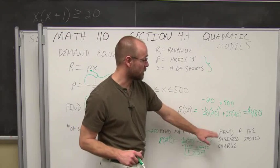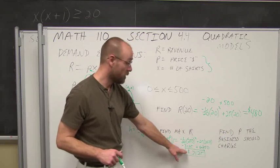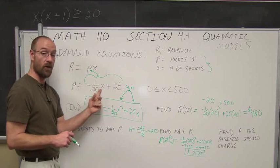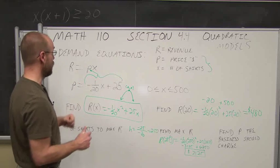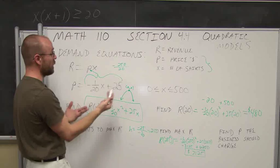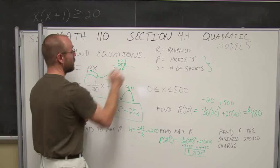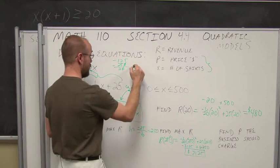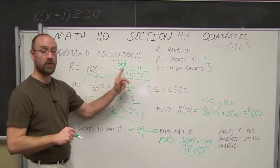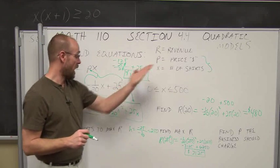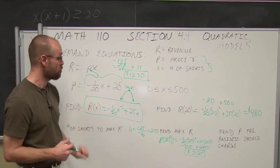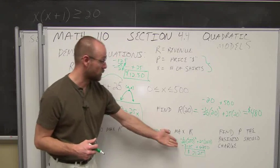The last part asks what price the business should charge to earn this maximum revenue. Going back to the demand equation already solved for p, I plug in x = 250: negative 1/20 times 250 gives negative 12.5, plus 25 equals $12.50. So I charge $12.50 per shirt, sell 250 shirts, and the demand equation tells us that's the right level to maximize our revenue of $3,125.